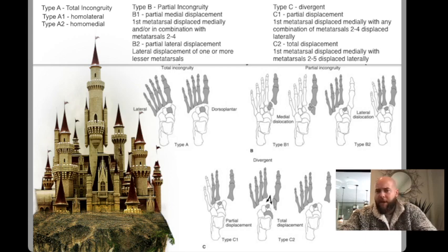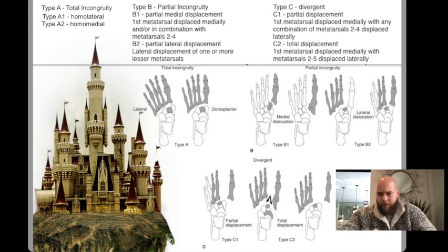You need to know the high yield facts of Lisfranc injuries. There is the fleck sign, which is a little ossification that avulses between the first and second metatarsals. You also need to know that there is no ligamentous connection between the first and second metatarsals. The first metatarsal is connected to the middle cuneiform, and the Lisfranc ligament has three parts: dorsal, middle, and plantar.